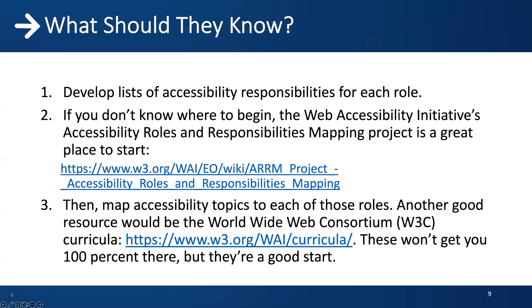Once you define the roles, you'll need to develop a list of accessibility responsibilities. If you don't know where to begin, the Web Accessibility Initiative's Roles and Responsibilities Mapping Project is a great place to start. Then you'll map accessibility topics to each role. Another great resource is the World Wide Web Consortium's curricula. These won't fill all your needs, but they are a great resource if you're beginning to build role-based training curricula.